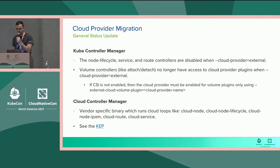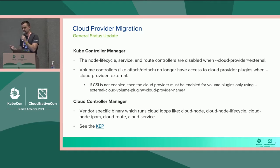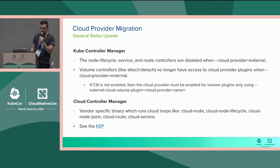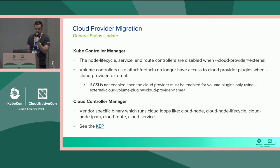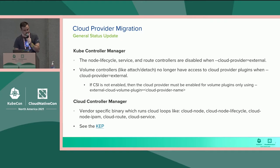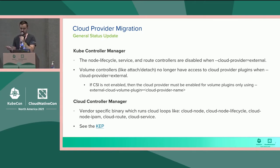Specifically for the kube controller manager, you would set the cloud provider flag to be external. When you do that, those control loops are disabled, and you would start the cloud controller manager alongside it. An interesting note is that the volume controllers are also going to be acting on cloud resources, but those are not disabled by setting cloud provider equals external — it's just not going to have access to some of the cloud volume plug-ins. So you'd want to run CSI along with your cloud controller manager, or you can pass a flag called external-cloud-volume-plugin set equal to your provider — AWS, GCP, whatever it is.